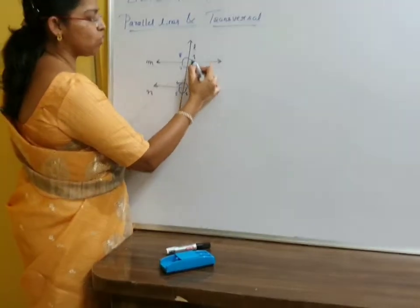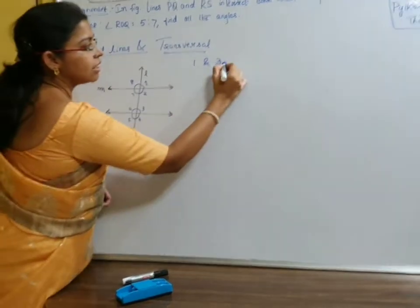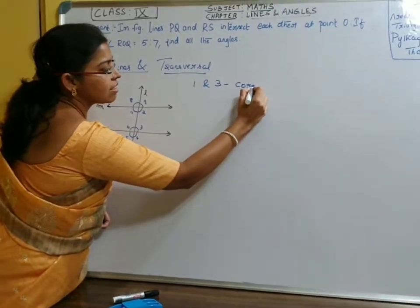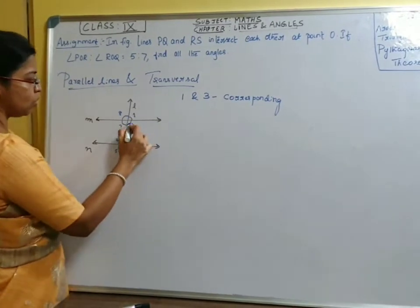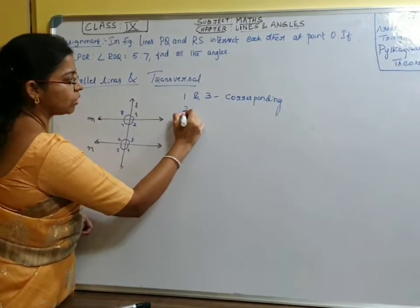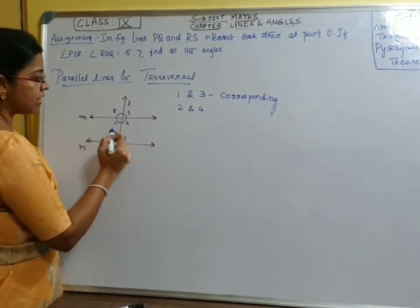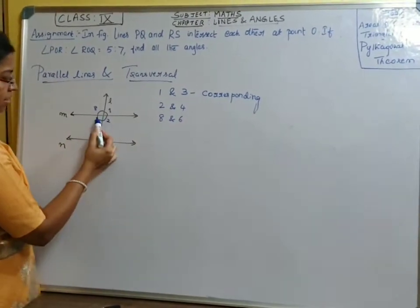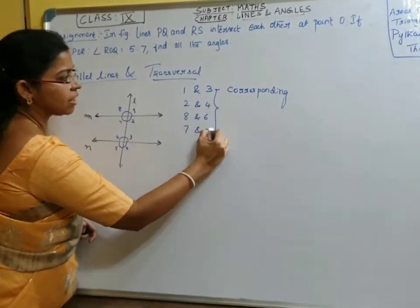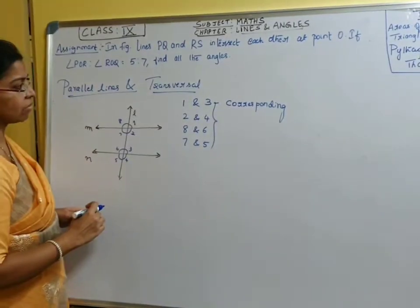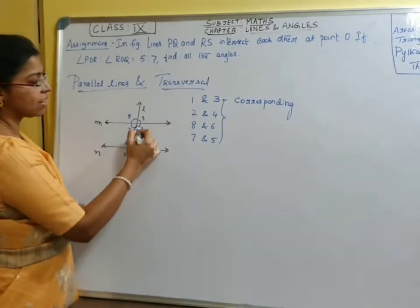Now we will see other sets of angles. What about angles one and three? One and three are corresponding angles. What about two and four? Two and four are also a corresponding pair. Similarly eight and six, seven and five — they are all corresponding. Corresponding angles are those angles which are formed on the same side of the transversal.